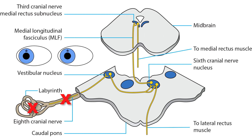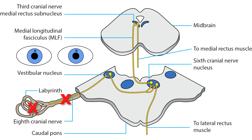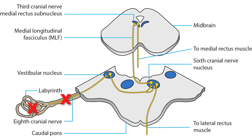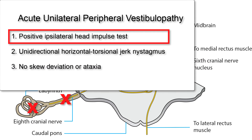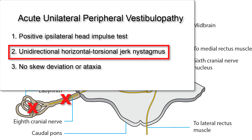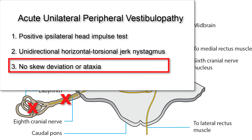Notice that the nystagmus has its greatest amplitude in gaze opposite to the lesion's side. This nystagmus pattern is typical of acute unilateral peripheral vestibulopathy. To be really sure of a peripheral lesion, the positive head impulse test and the unidirectional horizontal torsional jerk nystagmus should be accompanied by the absence of skew deviation or ataxia. We'll look at skew deviation later in this video.